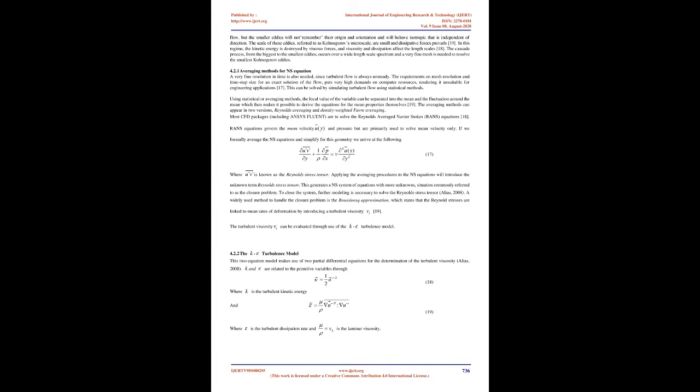Section 4.2.2: The K-epsilon turbulence model. The turbulent viscosity can be evaluated through use of the K-epsilon turbulence model. This two-equation model makes use of two partial differential equations for the determination of the turbulent viscosity. Where K is the turbulent kinetic energy and epsilon is the turbulent dissipation rate, while ν_L is the laminar viscosity. The turbulent viscosity can then be calculated using the Prandtl-Kolmogorov equation, which expresses ν_T as a function of the turbulent kinetic energy and its dissipation rate. Where C_μ is an empirically determined model constant equal to 0.09, while K and epsilon are obtained by the solution of their respective transport equations.